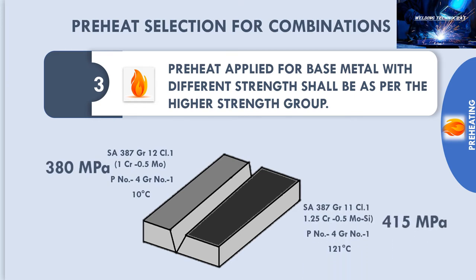Part 2 is P No. 4, Group No. 1, S387, Grade 11, Class 1 — 1 quarter chrome half moly silicon of 415 MPa. The minimum preheat temperature for this part is 121 degree Celsius. Between 380 and 415 MPa, 415 MPa is higher, so preheat temperature shall be selected on that basis: 121 degree Celsius as per the higher tensile strength of 415 MPa.